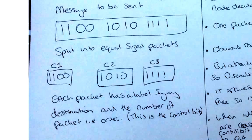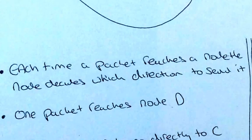Each packet has a label on it saying where the destination is and a number to say which packet number it is. So, for example, this is the first one, as we can see here. This is the second one. And this is the third one. So we've got the actual address and also we've got a number to designate which order it is, which is the control bit.